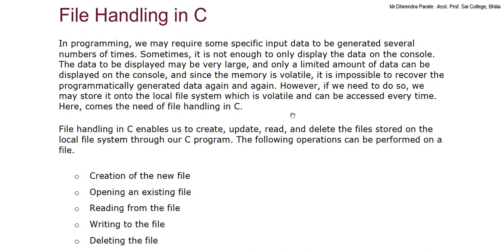Here comes the need for file handling in C. When we do C programming, we take many inputs and produce many outputs. Sometimes it doesn't display the output on the console screen because the contents are very large. There is no scrolling functionality there, so we cannot display the data on the console screen. There are very large amounts of data, and the memory which is volatile means we cannot store the output.